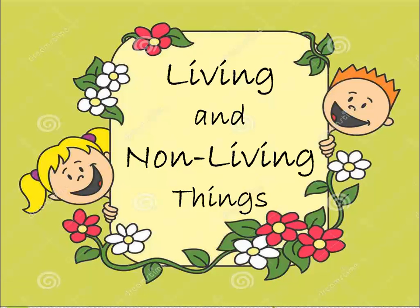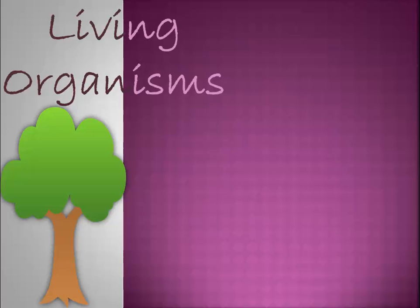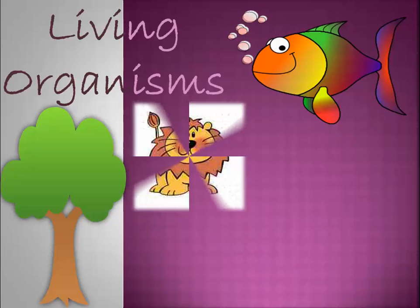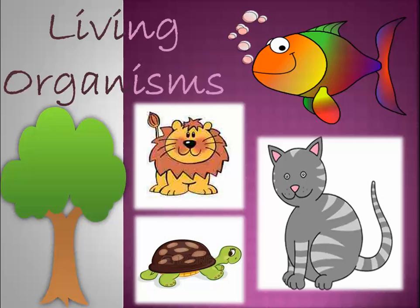Now we're going to revise living and non-living things, KG1. Living things are things that can eat, drink, feel, and respire — like the tree, the fish, the lion, the turtle, and the cat.